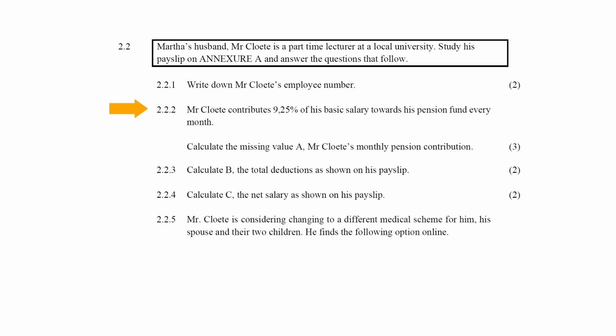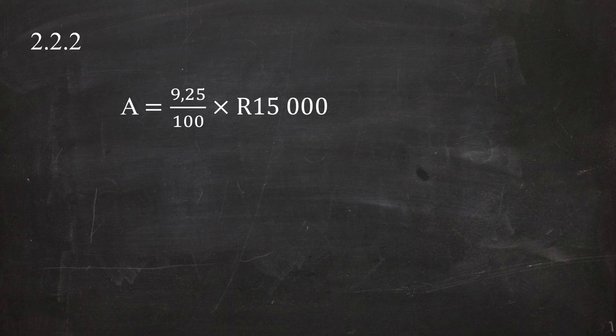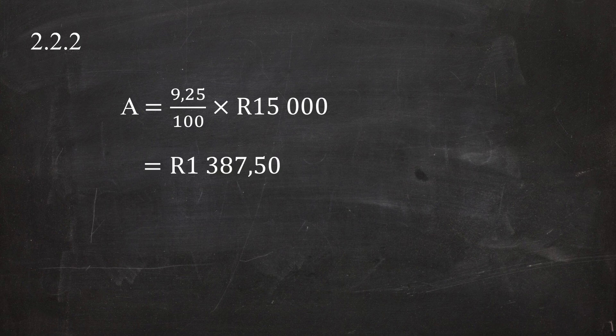In Question 2.2.2, it is stated that Mr. Clouty contributes 9.25% of his basic salary towards his pension fund every month. You are instructed to calculate the missing value A, which is his monthly pension contribution. From the payslip, the basic salary equals R15,000. So his pension fund contribution is 9.25 divided by 100, multiplied by R15,000, which equals a pension fund contribution of R1,387.50.